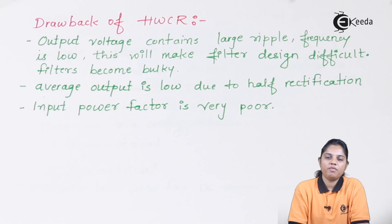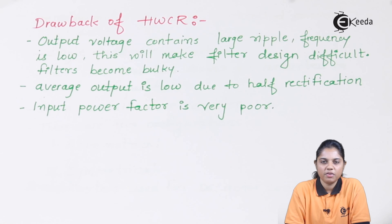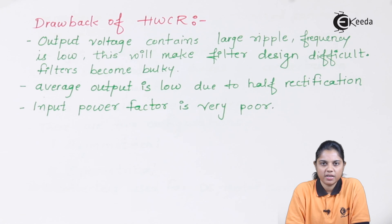Due to these particular disadvantages of the half wave controlled rectifier, we always prefer to have full wave rectification, where both positive and negative half cycles can be utilized for rectification. We are going to see the full wave rectifier in the next upcoming videos. Thank you for watching. Stay tuned to eKIDA. Do subscribe to eKIDA.